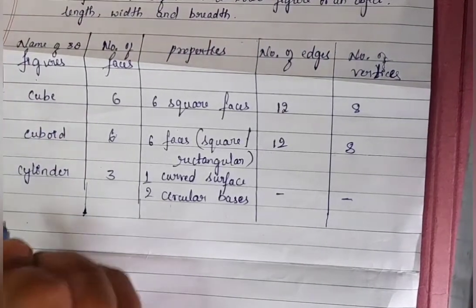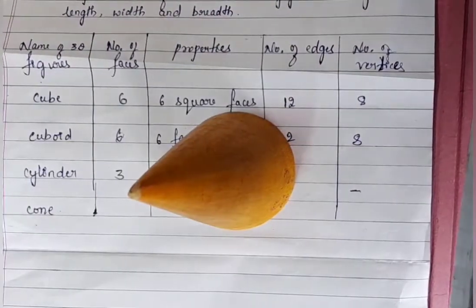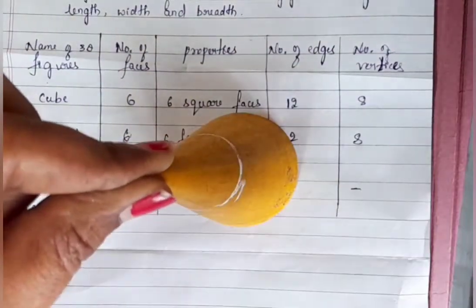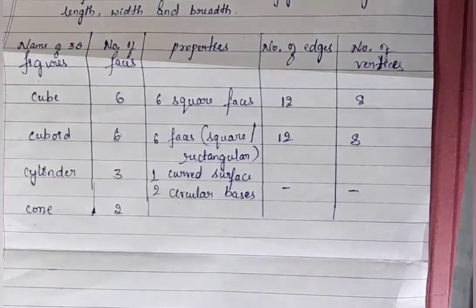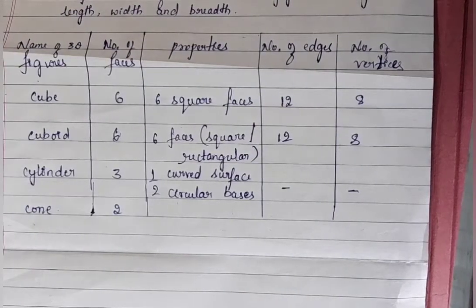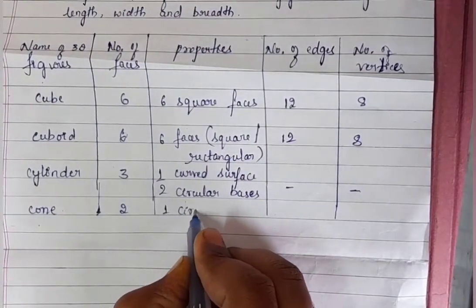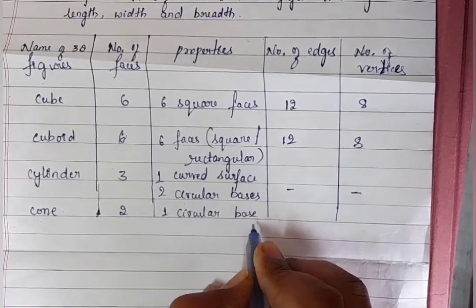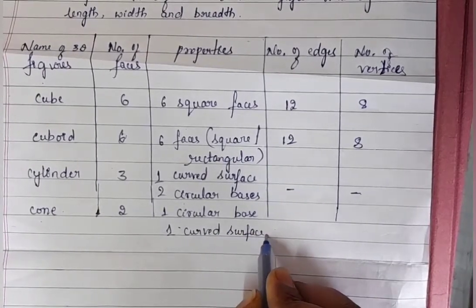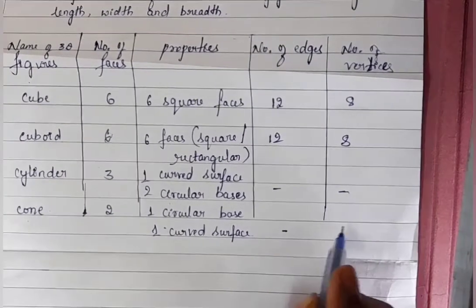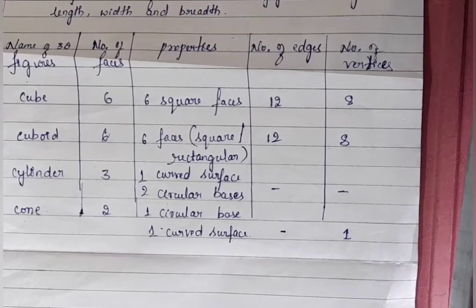The next figure is a cone. Count the number of faces in the cone: this is one face, and this is another face. So the number of faces in a cone is two. Properties: one circular base and one curved surface. A cone has no edges, and its vertex count is one — a vertex is a corner where edges meet.